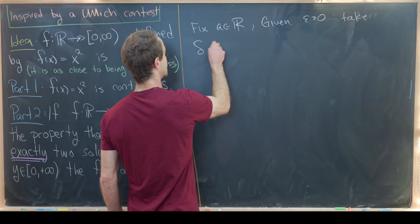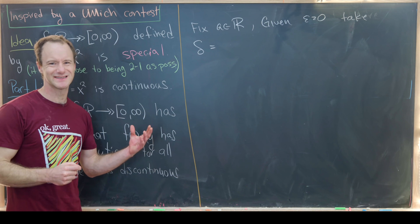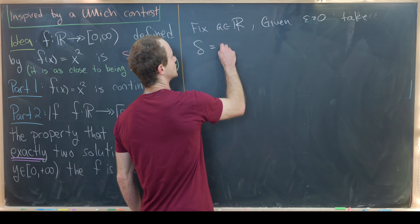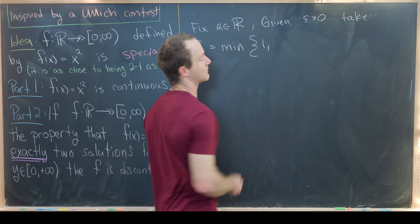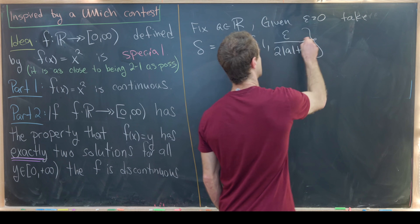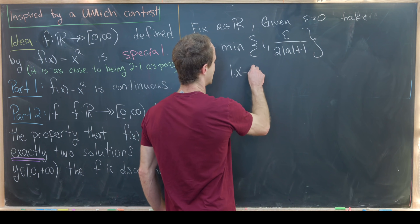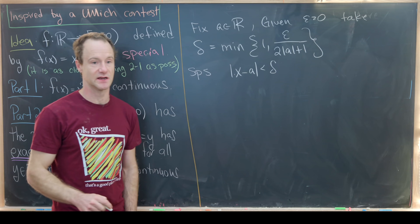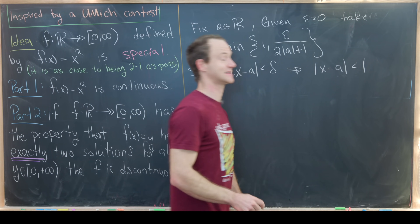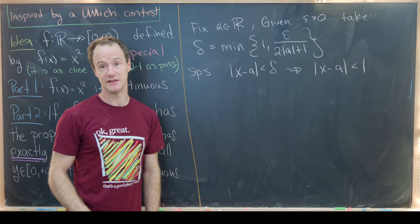We take delta to equal the minimum of 1 and ε / (2|a| + 1). We won't go through all the scratch work for how to get this number, but the calculation will make it clear. Now suppose |x − a| < δ. This implies |x − a| < 1, since delta is at most 1 as the minimum of these two numbers.